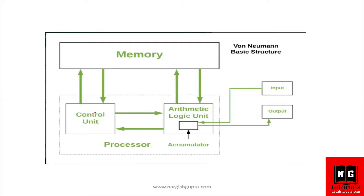The next one is the control unit. If we say that the CPU — central processing unit — is the brain of the computer, then the actual brain within the CPU is the control unit. The control unit coordinates between the memory and the arithmetic and logic unit. Whatever data is needed by the ALU, the control unit takes it from the memory and provides it. When the ALU is done with its calculation, it provides the data back to the control unit to store it into memory.